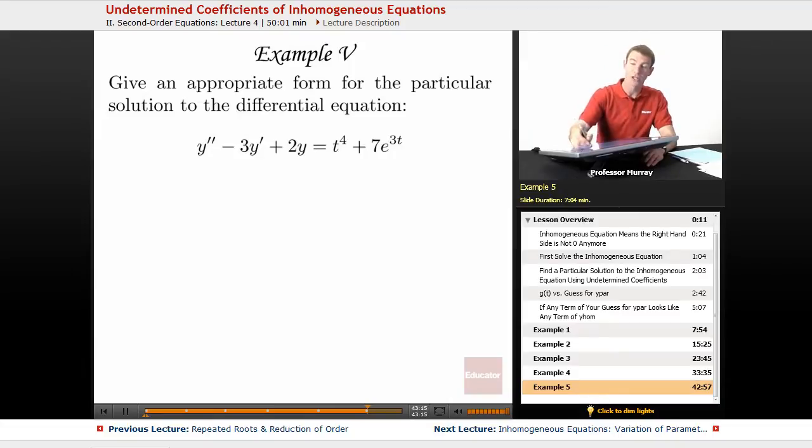Now remember, on all these equations you have to start by solving the corresponding homogeneous differential equation. In this case, we solved the homogeneous equation back in example one. You can check back there if you don't remember how we solved that, but it was using the characteristic equation. We figured out that the homogeneous solution was c1*e^t + c2*e^(2t). So that was the homogeneous equation.